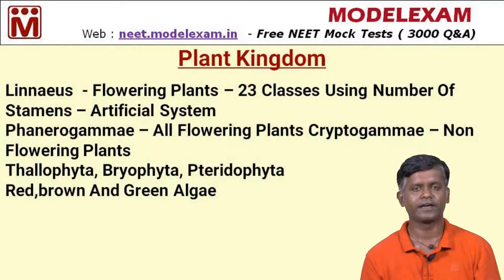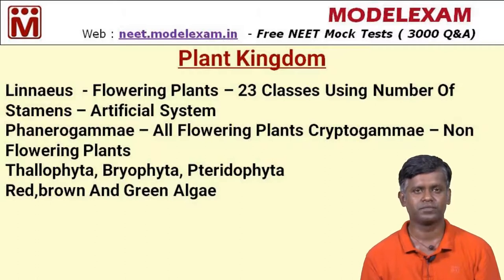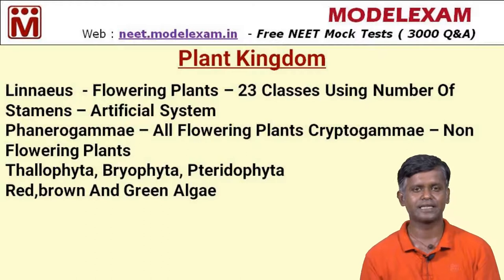Plant kingdom: we have seen the living world and classification systems; now we go into depth of the plant kingdom. According to Carlos Linnaeus, he classified the flowering plants into 23 classes, based on the number and presence of stamens.